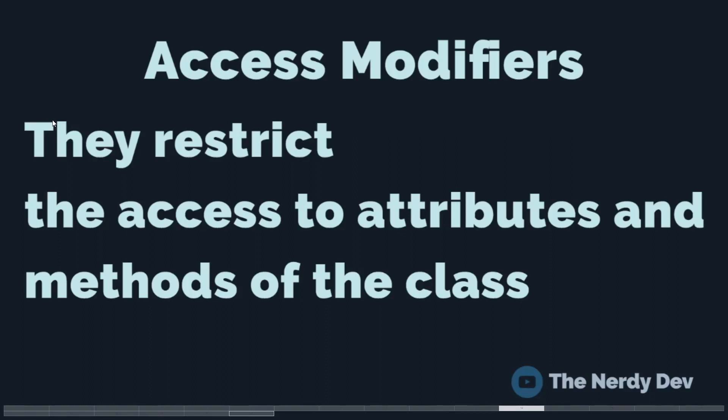Hey guys, I'm back with a new video. In this video, we'll learn about the access modifiers that are available to us in Python, which are namely private, public, and protected. What these access modifiers do is that they restrict access to attributes and methods of the class. So let us go over these access modifiers one by one.